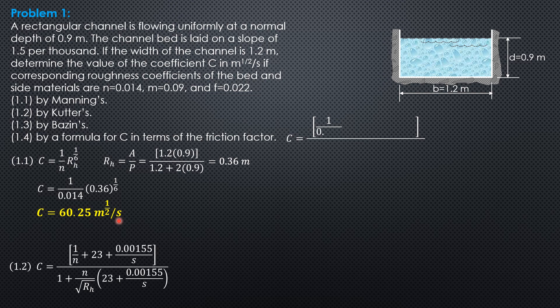Substitute, C is 1 over 0.014 plus 23 plus 0.00155 over 0.0015 plus 1 over 0.014 over square root of 0.36 quantity 23 plus 0.00155 over 0.0015. So using your calculator there, C is 62.03 meter to the 1.2 per second. So they're just close, Manning's and Kutter's C.